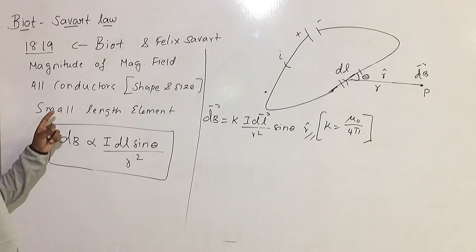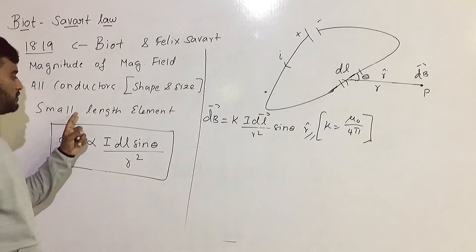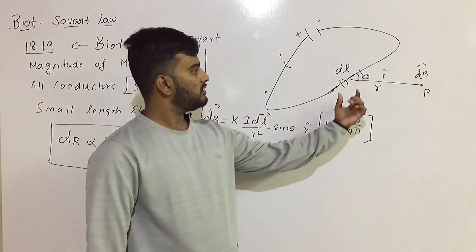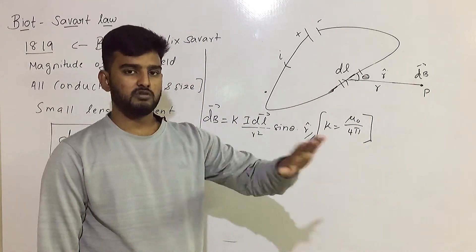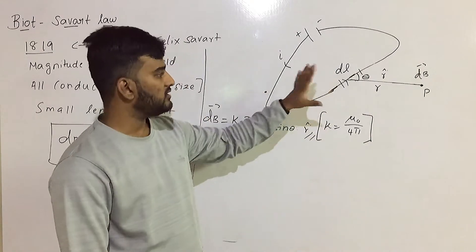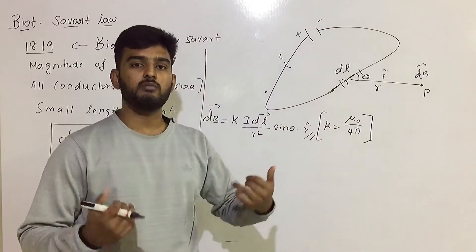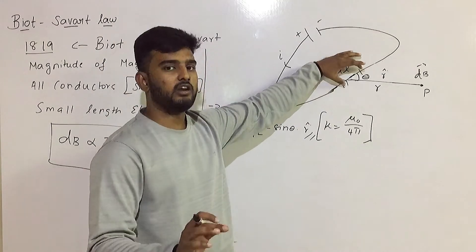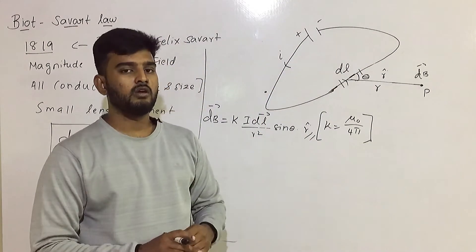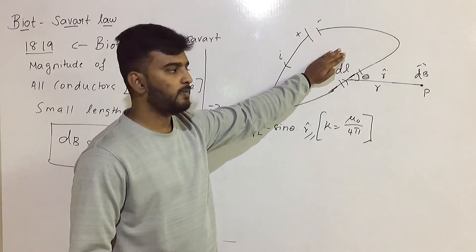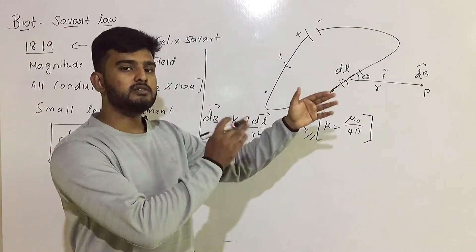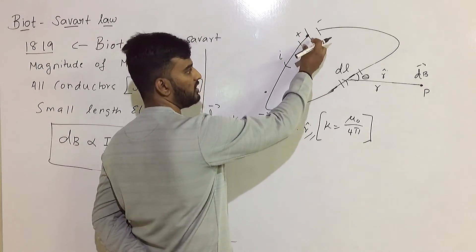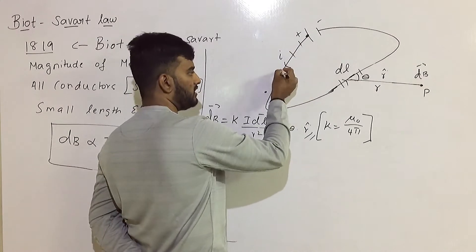To apply Biot-Savart Law, we choose a conductor and select a small length element dL. If we apply it to the whole conductor, we divide it into small length elements and integrate. By applying the value of each small length element, we obtain the total magnetic field.